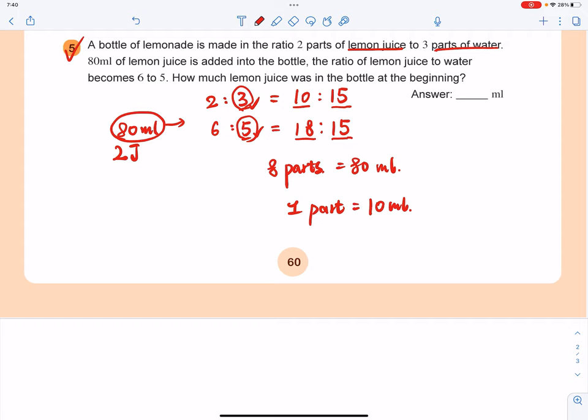The question is, how much lemon juice was in the bottle at the beginning? So you have to use this ratio. At the beginning, you have 10 parts of lemon juice, and we already know that 1 part is 10 milliliters. So the answer will be 10 parts times by 10 milliliters of each part. So you get 100 milliliters.